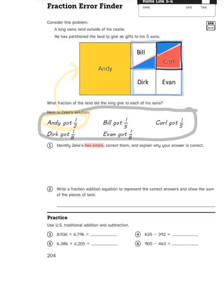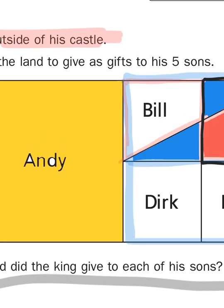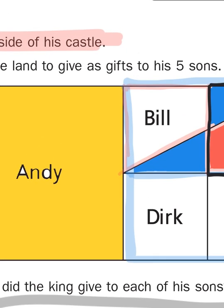Well, the sum total will be one, because you're adding fractional parts together to total the land outside of the king's castle. So that is the unit, the one, that we're talking about here. That's the sum of one.